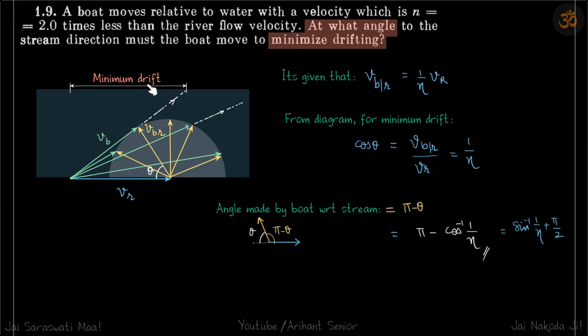To minimize the drift, this eventual velocity of boat has to be tangent to this semicircle, which means this angle has to be 90 degrees. So this is the condition for minimum drift.